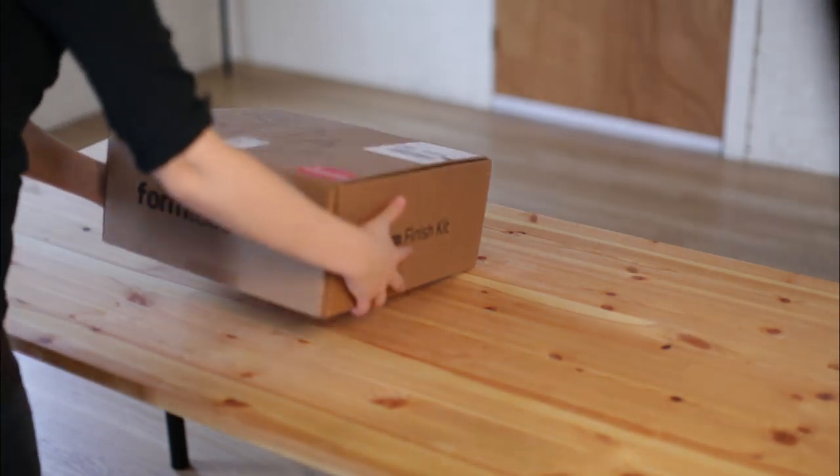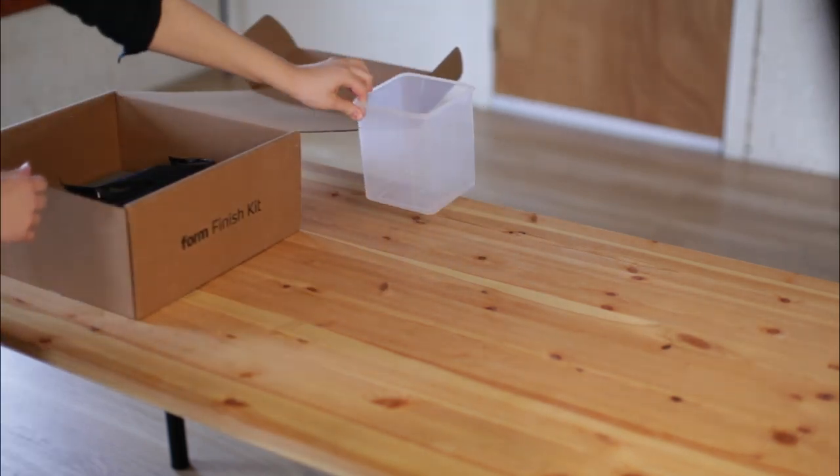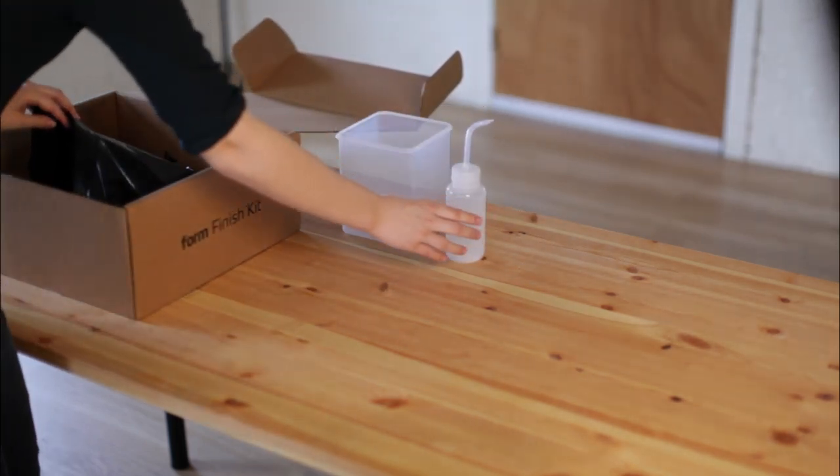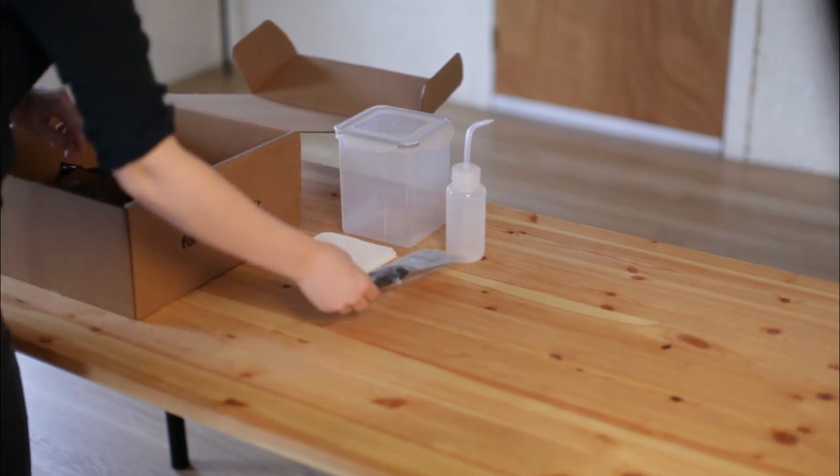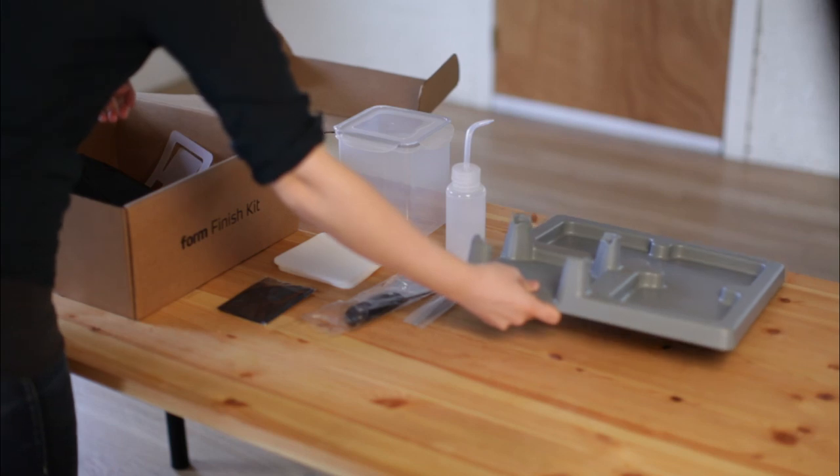Your finish kit contains everything you need to complete the printing process with your Form 1. A wash bucket, squeeze bottle, absorbent foam pad, scraper, microfiber cloth, tweezers, and the finishing tray.